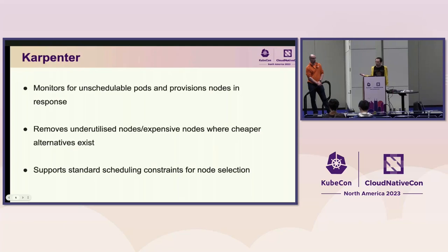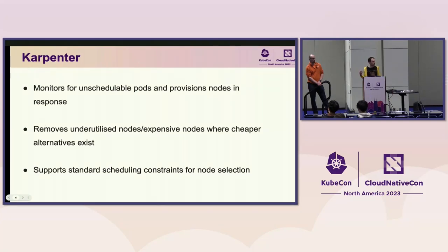Karpenter works quite similarly in some ways, different in others. It also monitors for unschedulable pods and provisions nodes in response. It's slightly different in how it performs scale down of underutilized nodes — it's able to look at nodes and, if it can move all the pods onto a different node that it brings up, it will do that. So if it thinks it can replace one big node with a smaller, cheaper node, it's capable of doing that. It also supports standard scheduling constraints for node selection.